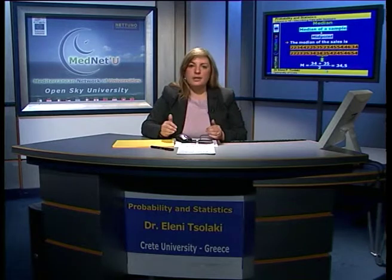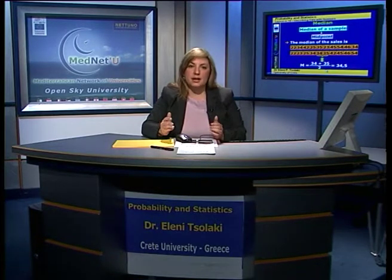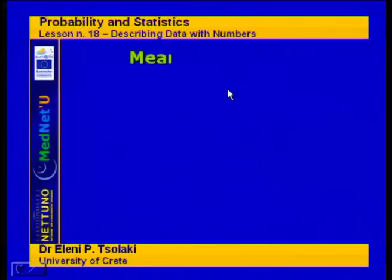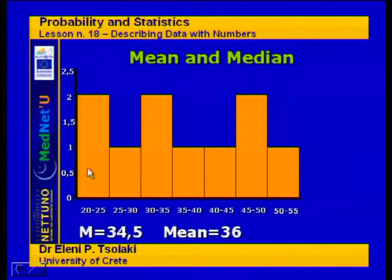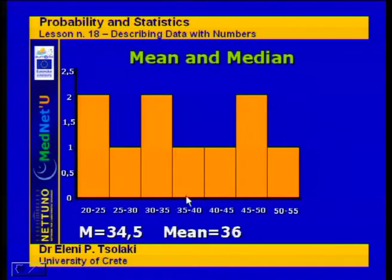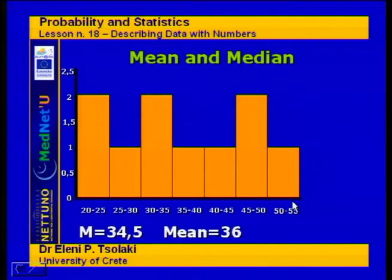Let's look at the graph and see what the mean and the median mean graphically. We have created a histogram, and we see here that the median is 34.5 and the mean is 36, both almost at the center of our graph. The median is exactly at the center, and the mean also measures the center of the histogram.